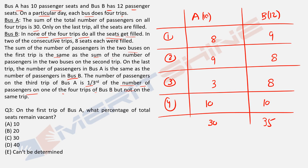Question 3: on the first trip of Bus A, what percentage of total seats remain vacant? Bus A has 10 seats and Trip 1 had 8 passengers, so 2 seats were vacant. 2 as a percentage of 10 is 20%. The answer is option B.